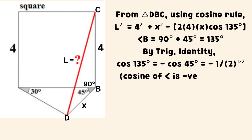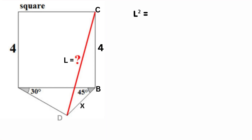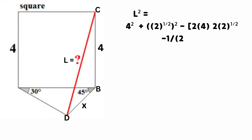By trigonometric identity, cosine 135 degrees equals negative cosine 45 degrees, which equals negative 1 divided by the square root of 2. This is because the cosine of an angle is negative in the second quadrant. Substituting values, we have that the square of L equals the sum of 16, 8, and 16, which equals 40.